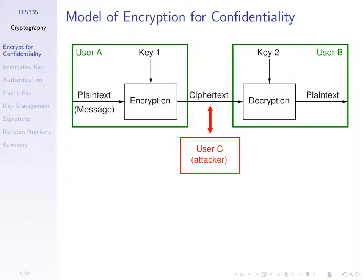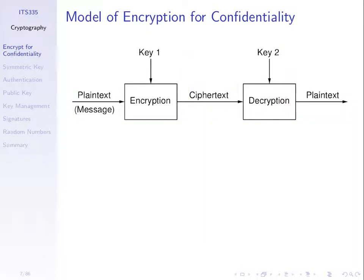There are in fact two different models. The most common is that A and B use the same key — the exact same value — to encrypt and decrypt. But there's an alternative, which we'll see later.